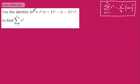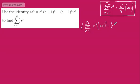We've got four lots of r cubed in that identity, and we want to use it to find the sum. So if we take one quarter of the sum from r equals 1 to N of r²(r+1)² minus (r−1)²r², that will equal the sum from r equals 1 to N of r cubed.